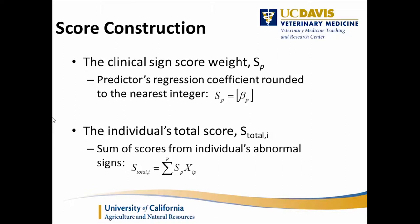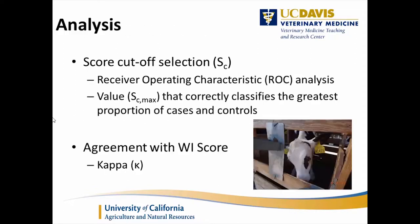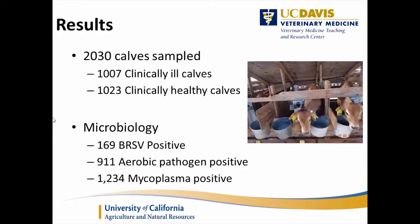The cutoff for a positive BRD case was determined using receiver-operating characteristic (ROC) curves. We also looked at the agreement between scoring systems. A total of 2,030 calves were sampled — 1,007 ill and 1,023 healthy. We had about 169 BRSV positive, 911 calves with aerobic pathogens, and about 1,234 with mycoplasma positive results.